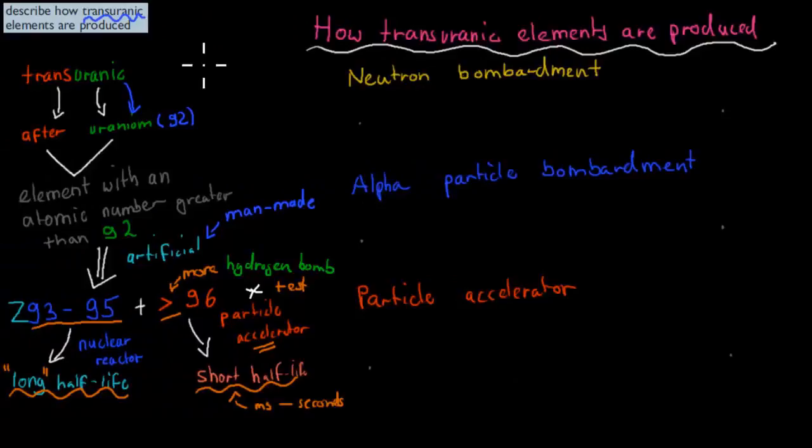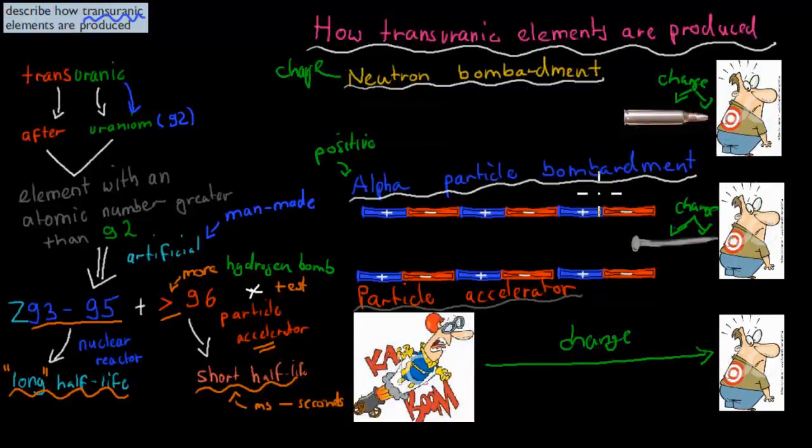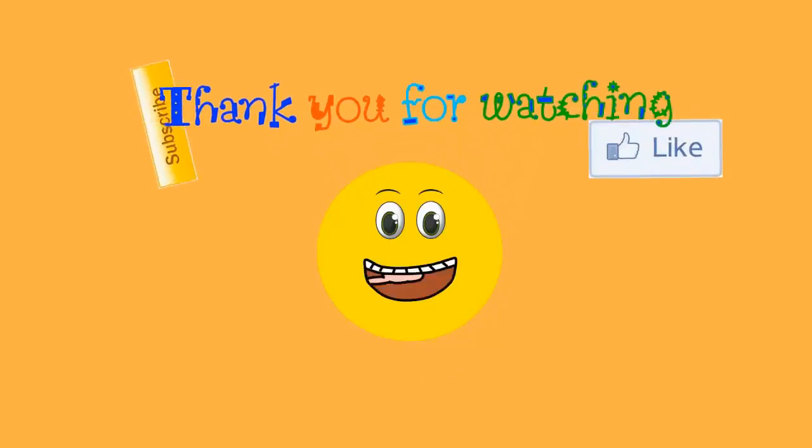So I hope that was useful. But yeah, so you have to describe how transuranic elements are produced. And the main ways they are produced are these three different ways: neutron bombardment, alpha particle bombardment, and particle accelerator. And you can use the analogy—I mean, as a bullet, because it goes straight. There's no change in direction when it comes to neutrons, because they have no charge. Positives are like a nail, which has to go really fast to avoid changing direction because it's magnetic. And a particle accelerator is like a human cannon. And then it's huge ion, which slams into its target. But yeah, hopefully that was useful. Thank you for watching.